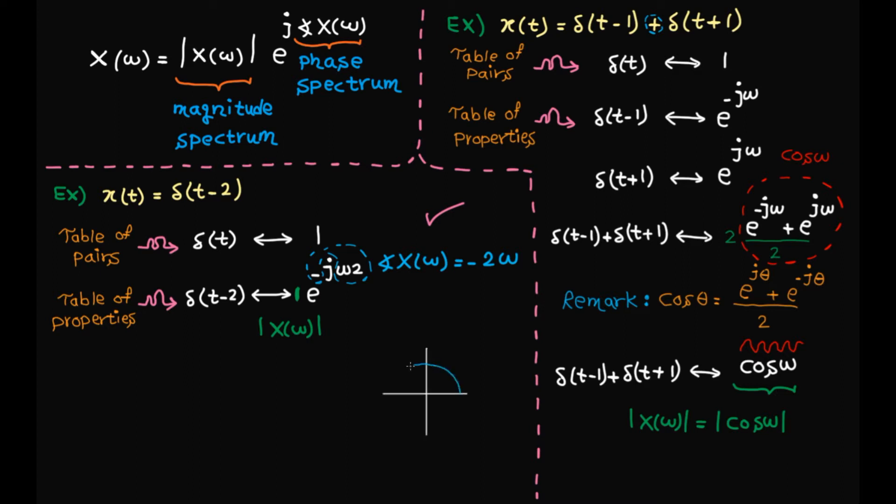As I said, cosine omega is a real number, but it can be positive or negative. Let's look at the phase on the unit circle. This is real axis and this is imaginary axis. A real number is always on the real axis. But for positive values, we are on the right side and for negative values, we are on the left side. So the phase for positive real numbers is zero and for negative real numbers is pi. So the phase spectrum is zero if cosine omega is greater or equal to zero and pi otherwise.